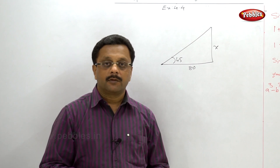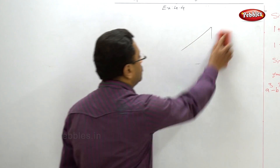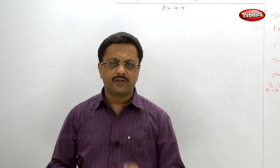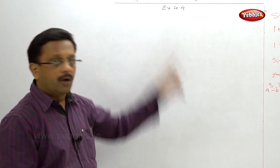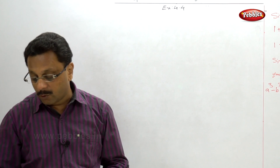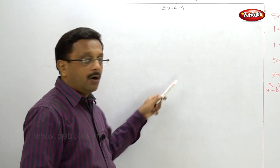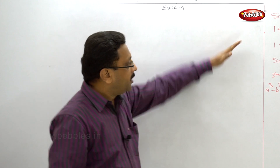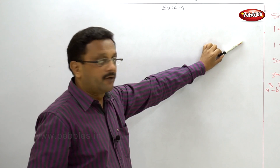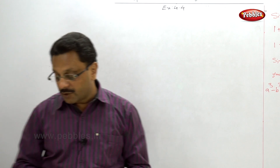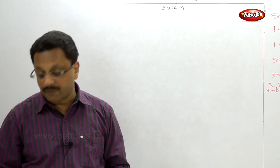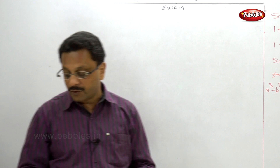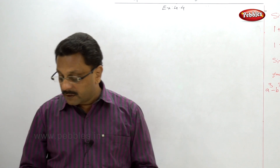This problem was essentially an oral problem, but better to solve it. Second example of 4.4: from the top of the lighthouse, an observer looks at the ship and finds the angle of depression. Draw a horizontal line, draw a lighthouse — from the top he sees the ship, and the angle of depression is 60 degrees. The height of the lighthouse is 90 meters.